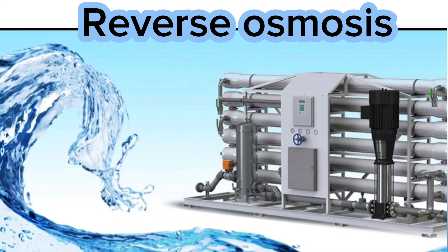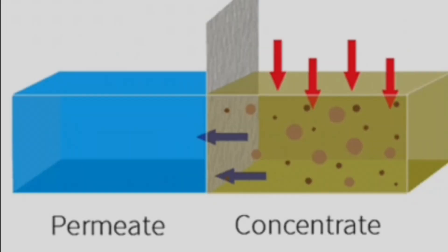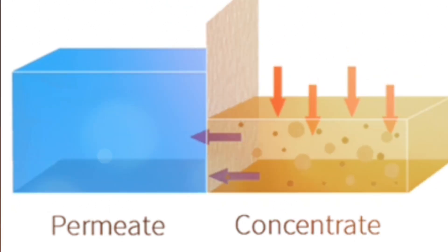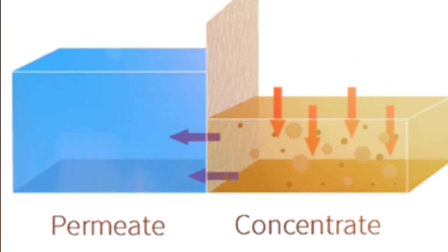RO stands for reverse osmosis, which is a process that uses a semi-permeable membrane to remove dissolved salts, impurities, and contaminants from water.